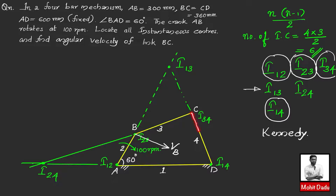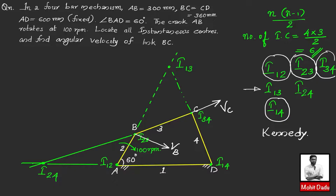Output link CD (link 4) also has pure rotation about point D, so point C has a velocity vector perpendicular to line CD, named V_C. Instantaneous center I13 can also be verified by drawing perpendiculars to the velocity vectors: since link BC has general plane motion, drawing perpendiculars to V_B and V_C intersects at I13. This confirms the location of I13.